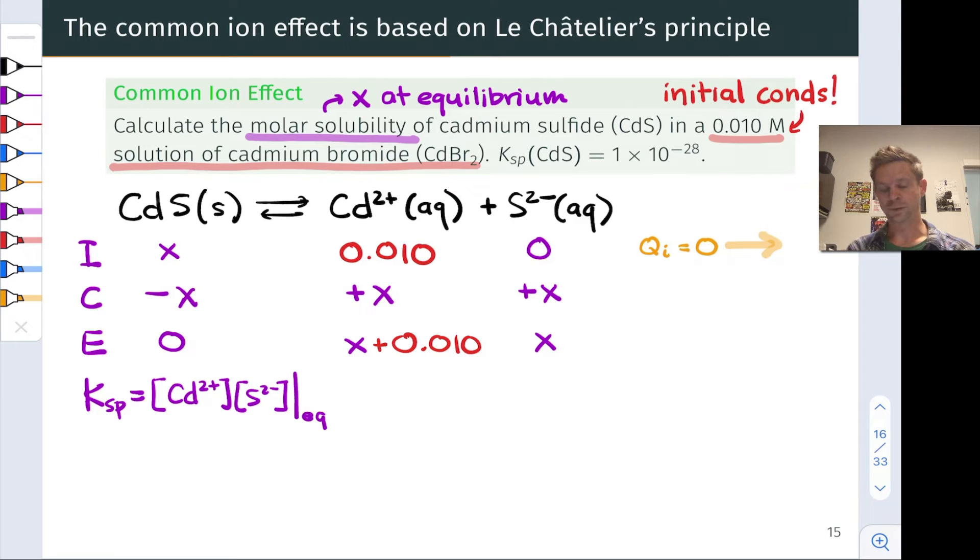The sulfide, let me start with that, is equal to x at equilibrium. That concentration is equal to x at equilibrium, the amount of cadmium sulfide that dissolved, essentially. And the Cd²⁺ concentration at equilibrium is equal to x plus the initial amount, 0.010 moles per liter.